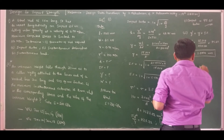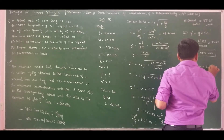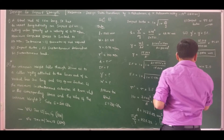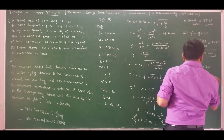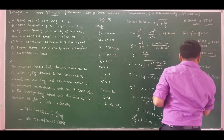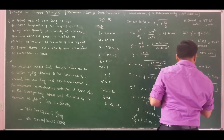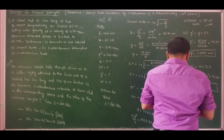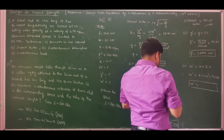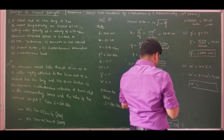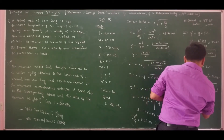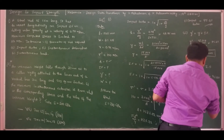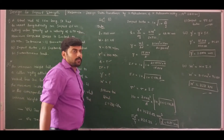For instantaneous load, W-dash equals W times impact factor. Therefore, W-dash equals 2.5 times 10 to the power 3 into 95.23, giving 238.075 kN. This completes the solution for problem number 1.